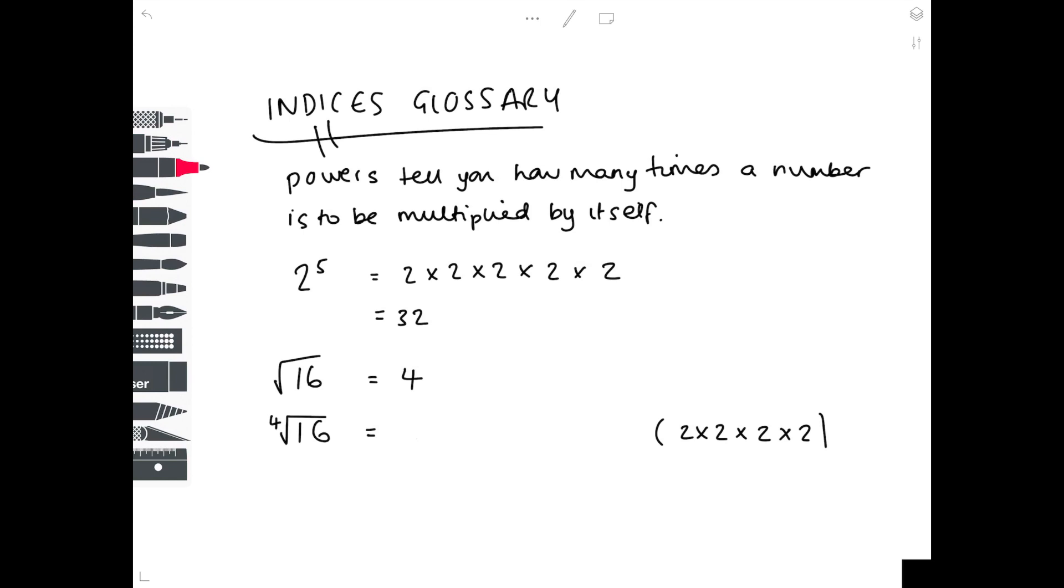We're going to make it slightly more complicated by writing a small 4 next to the root sign. This means finding the fourth root, so we're looking for the number which you multiply by itself four times to get to 16. As you can see, 2 times 2 is 4, times 2 is 8, times 2 is 16, which is why the fourth root of 16 is 2.